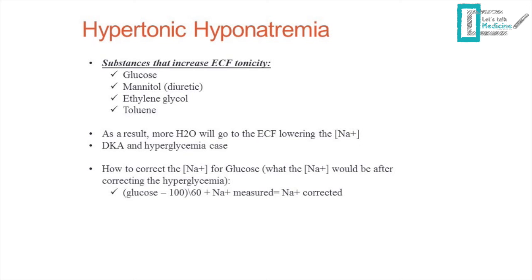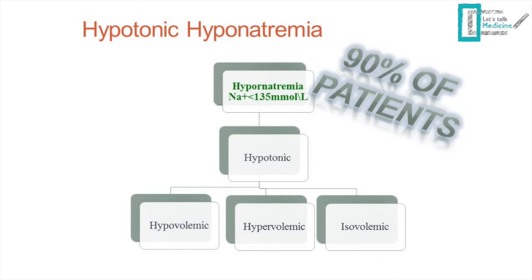This is the case in DKA and hyperglycemia. When you correct the hyperglycemia, you need to calculate what Na concentration will appear afterward. The equation is: corrected Na = measured Na + [(measured glucose − 100) ÷ 60]. It is really important to correct the sodium very slowly to prevent permanent neuronal damage, which is central pontine myelinolysis.